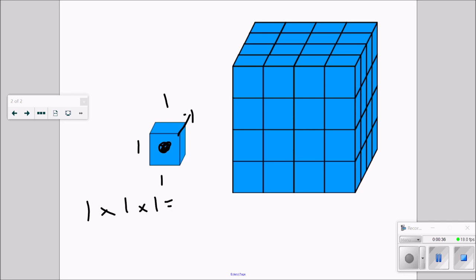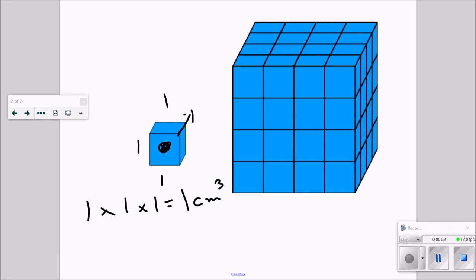So I've got one times one times one for depth. Well, what's one times one times one? It's one centimeter. However, this time we need to remember we're not in one dimension, we're not in two dimensions, we're in three dimensions. So we'll say it's one centimeter cubed. Easy, easy, easy.